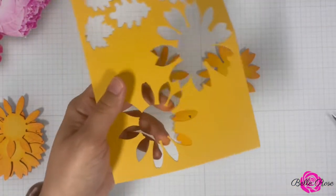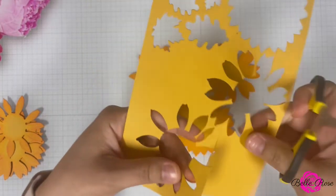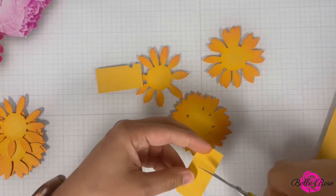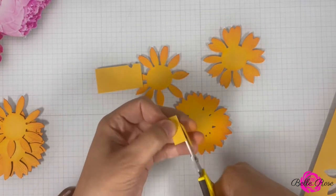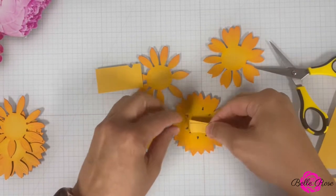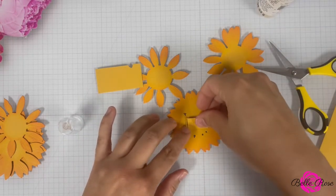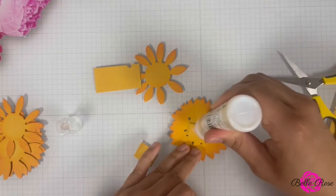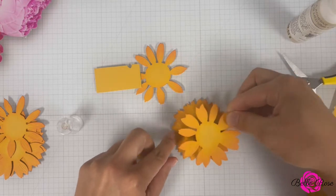Now it's time to add some dimension to the sunflowers. Using the scrap piece of cardstock that I used to cut out the flowers, I'm going to cut out strips of cardstock. I'm then going to use adhesive glue to adhere three strips on the first layer. And then from there, I'm going to add the second sunflower layer. And then I'm going to repeat the first step by adhering the strips of cardstock, and then finally adhering the final layer of the sunflower.